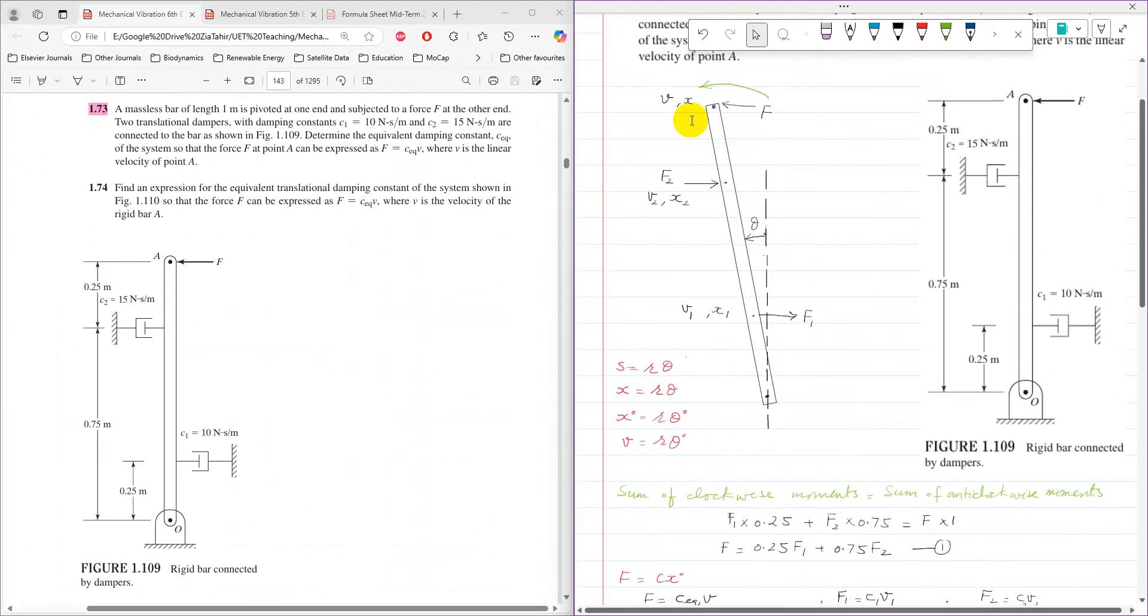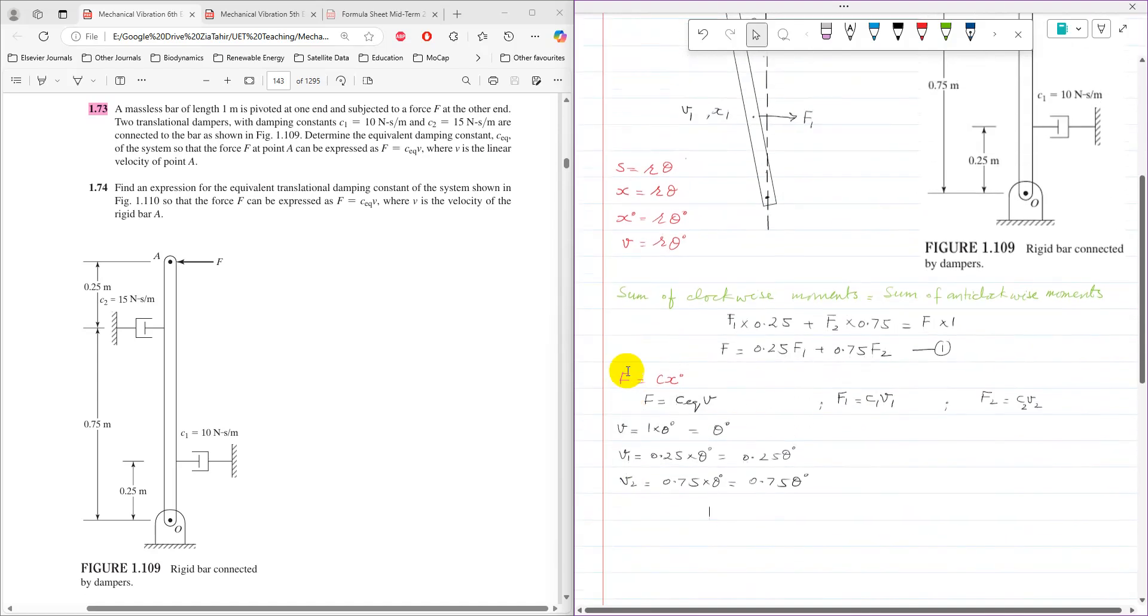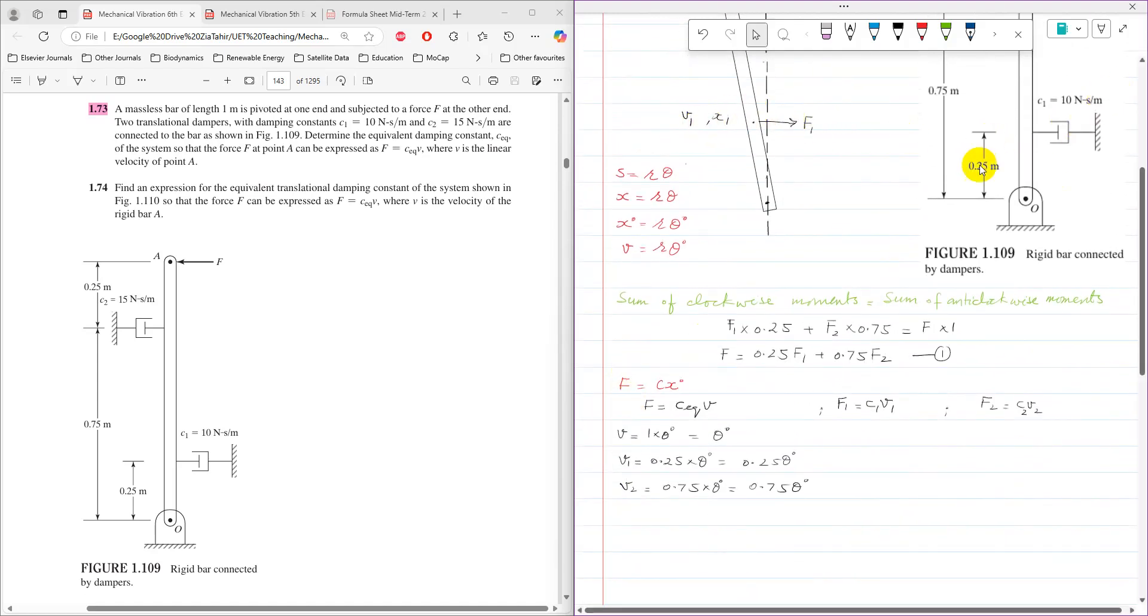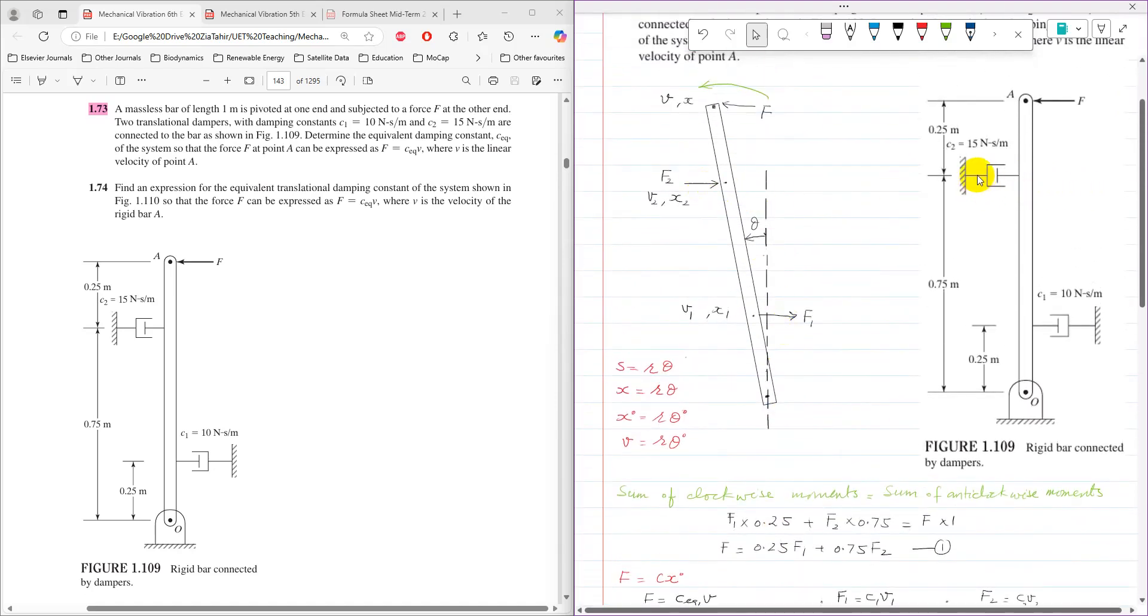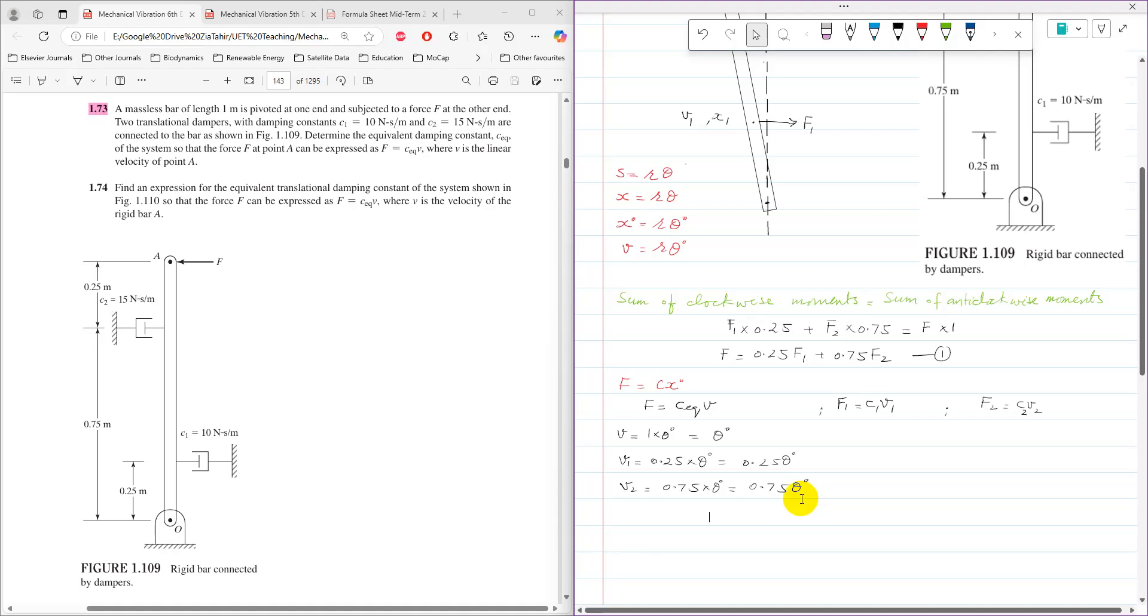Velocity V equals R theta dot. For point A, R is 1, so velocity is theta dot. For V1, the radius of rotation is 0.25, so V1 equals 0.25 times theta dot. For V2, the radius is 0.75, so V2 equals 0.75 times theta dot.